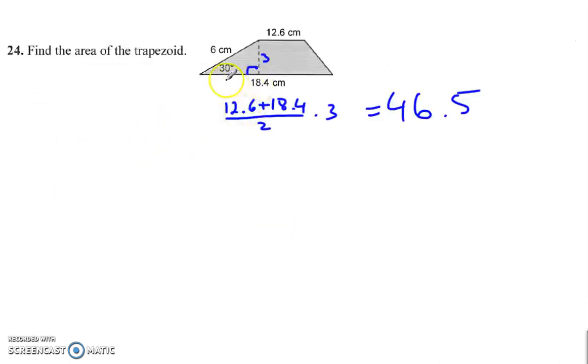Here again, 30, 60, 90, so here we have the right angle, so that's the hypotenuse, the hypotenuse is double the shorter side, so that makes this shorter side 3, and therefore we have the average of the two bases, add them together, divide by 2, times 3, we get 46.5.